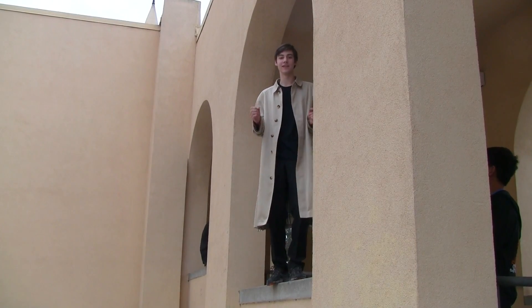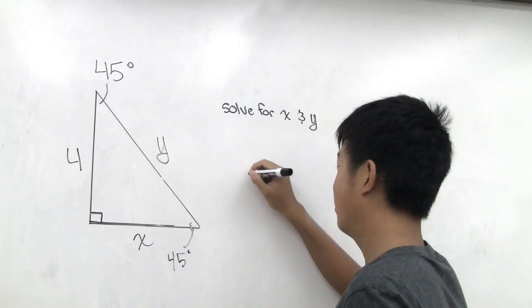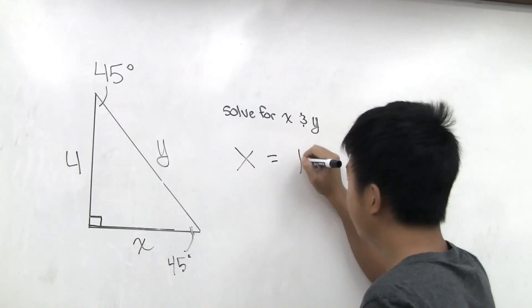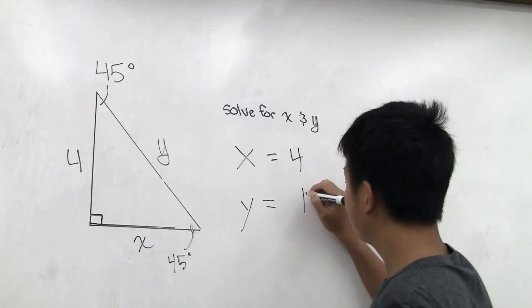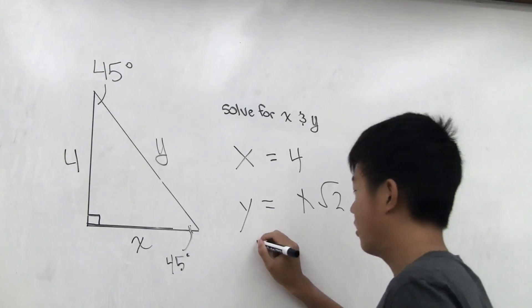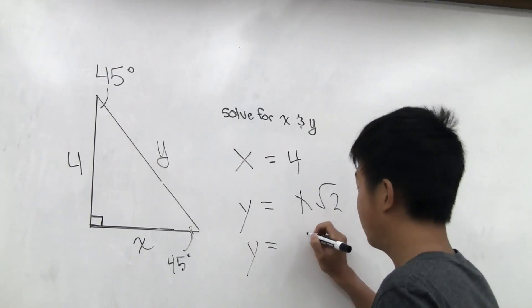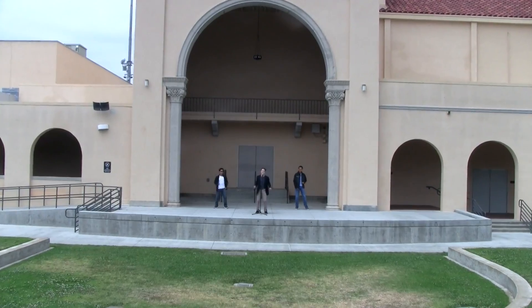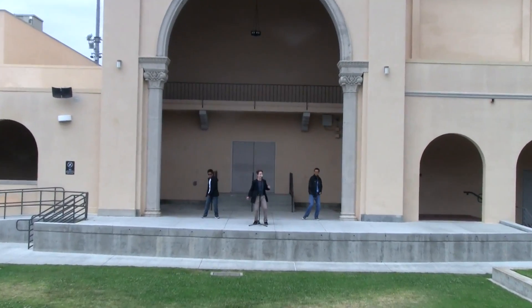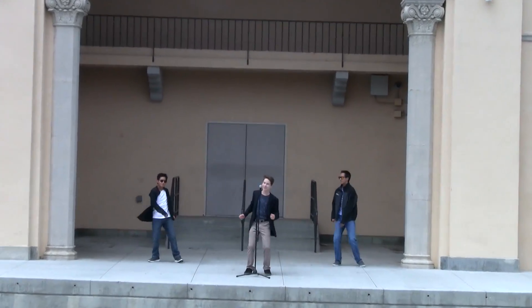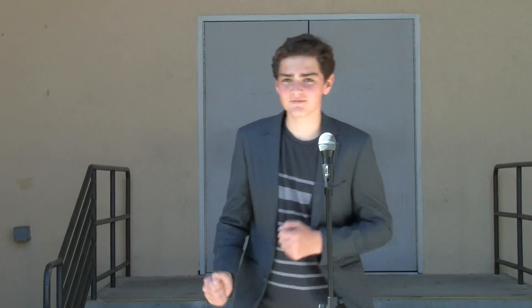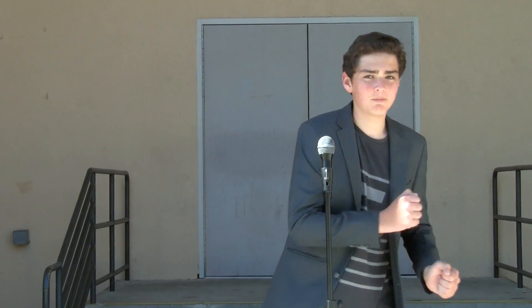45, 90, 45 — two congruent sides, and the hypotenuse is x-rad 2. 30, 60, and 90: sides x and x-rad 3, and the hypotenuse is x times 2.